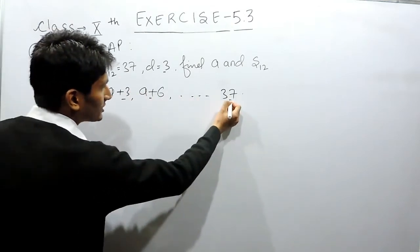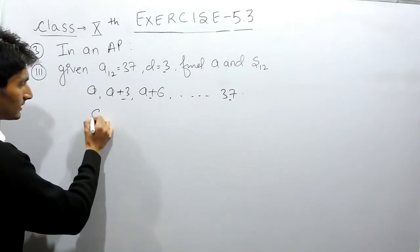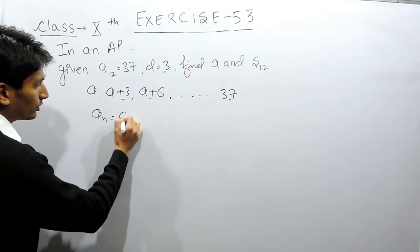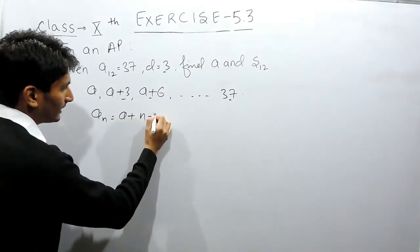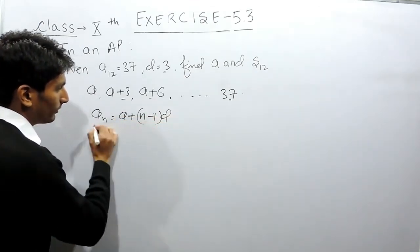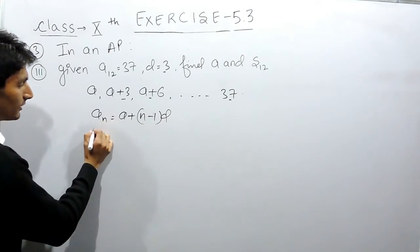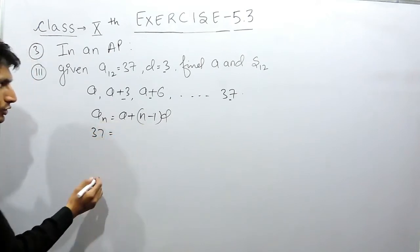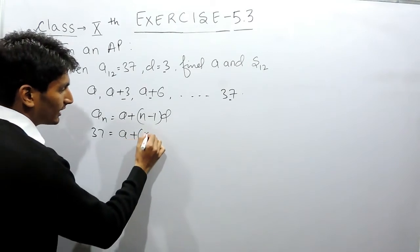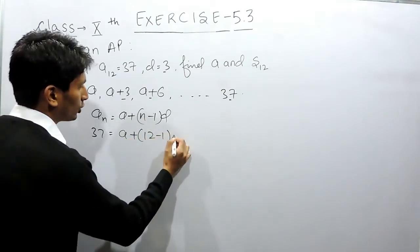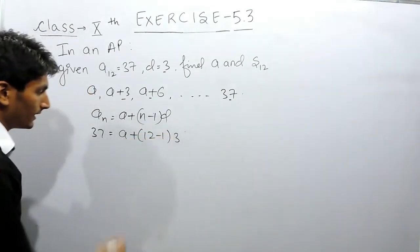Now, if the last term is given to you, means nth term is given to you, and for nth term we have a formula where the 12th term which is equal to 37 is given to you, the first term you have to find out, there are 12 terms in this AP and the common difference is 3.